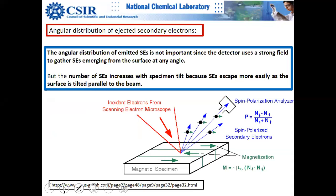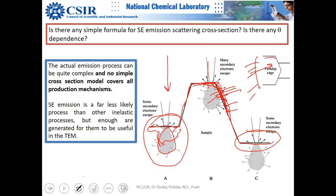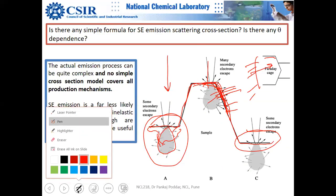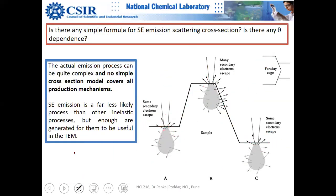The angular distribution of secondary electrons is not critically important because a positive bias voltage is applied at the detector to attract them. Even if an electron is ejected in an oblique direction, it will curve and reach the detector due to this positive voltage.